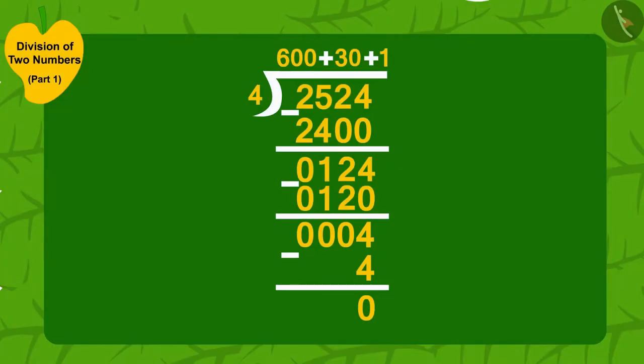We can find out by doing division in this way, so that Uncle can divide two thousand five hundred twenty-four mangoes into groups of four mangoes and divide it equally among six hundred thirty-one people.